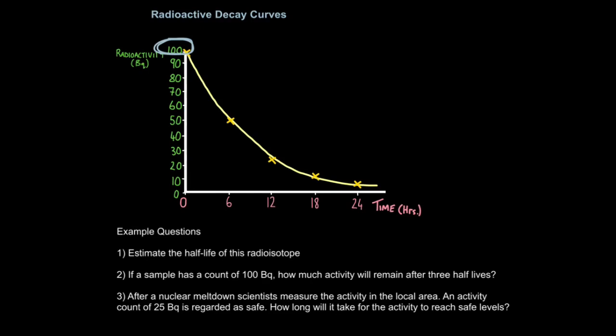Then you basically read off the graph. You go across until you meet the curve, then down to get the time. So the half-life of this radioisotope is six days, and that makes sense, because you can see every six days, the radioactivity is halving. So another six days, we're down to 25 from 50. Another six days, and we're down to 12.5 from 25. And another six days, we're down to 6.25.